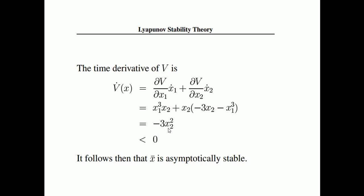After substituting, we ultimately get V-dot equals −3x₂². Notice that x₂² is always positive (a square term), and multiplying a positive quantity by 3 and then by minus gives a negative result. Therefore V-dot(x) is less than 0, which proves that x-bar is asymptotically stable.